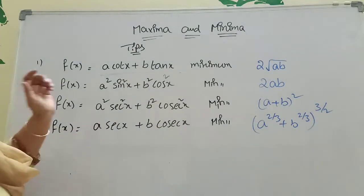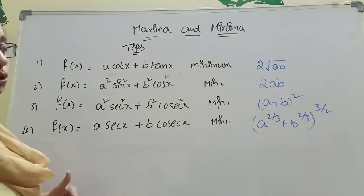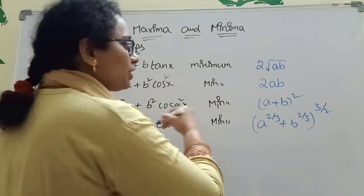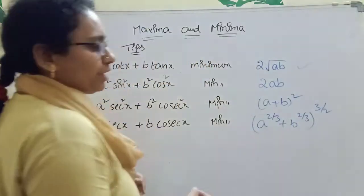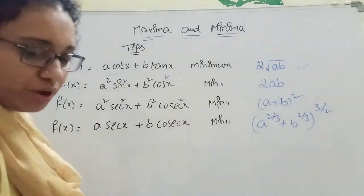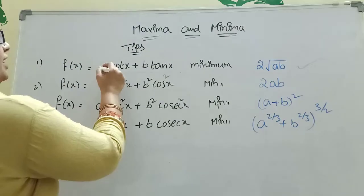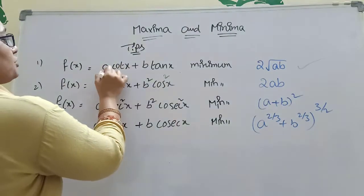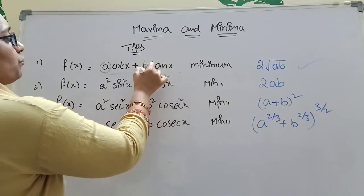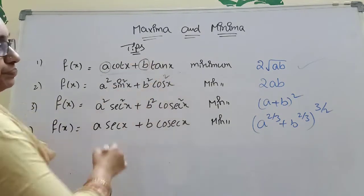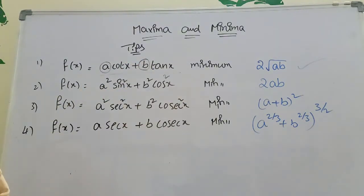Suppose A·cot(x) + B·tan(x) is given. Then you should find the minimum value. Directly write 2 into root of AB. What is the formula? 2 into root of AB. What is A? The cot(x) coefficient is A. The tan(x) coefficient is B. Directly write 2 into root of AB.